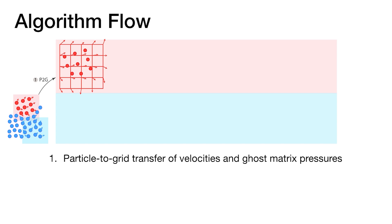First, we use APIC to do regular particle-to-grid transfer, with ghost coating particles transferring their pressures onto the grid.